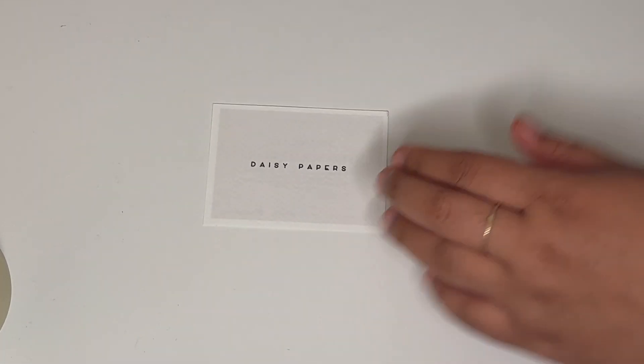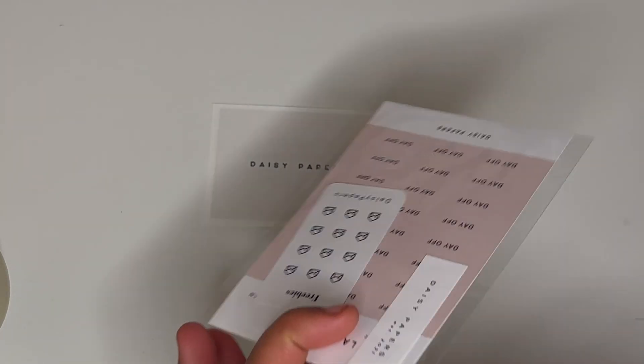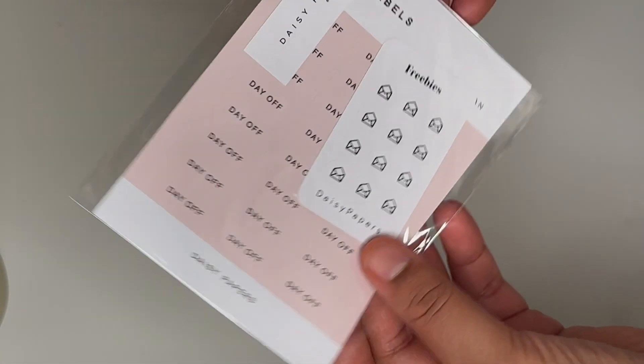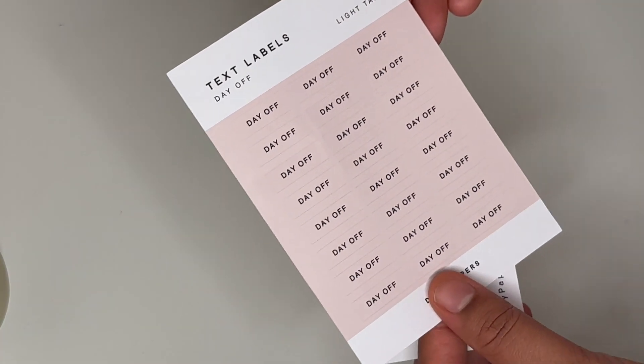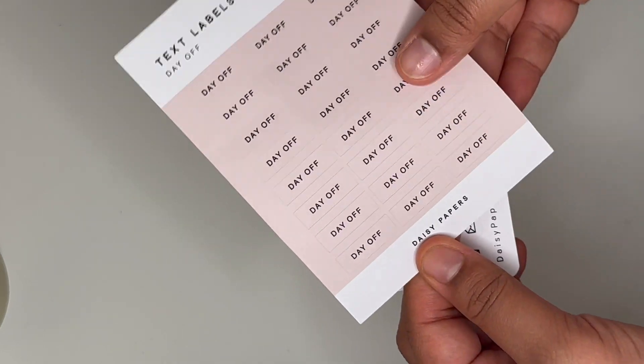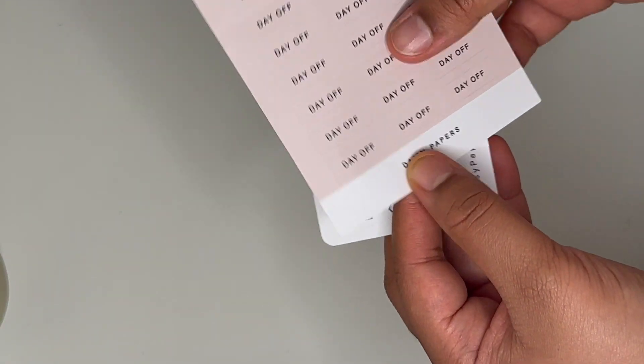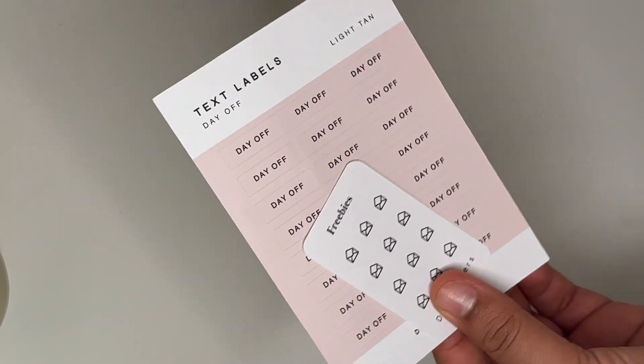The next thing that I got was actually from Daisy Papers and it came in with this cute little packaging. Let me open it up, this is her information. So yeah this is Daisy Papers and she gave me some freebies. I have here text labels that say day off in light tan which is really pretty, it actually goes super well with these colors here and I needed these for the days that I have no work. And then there's a little email, little freebies that she got me. This is also from Etsy.